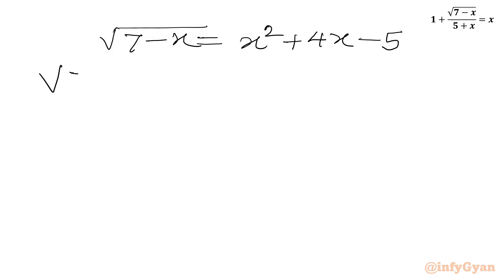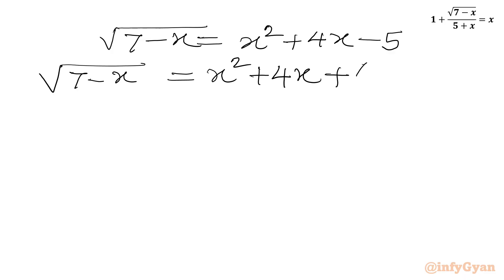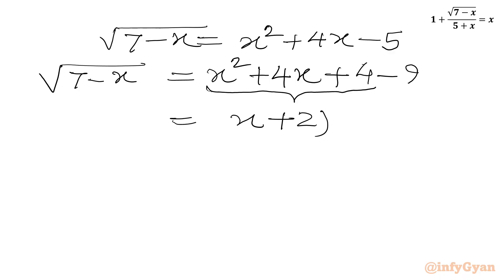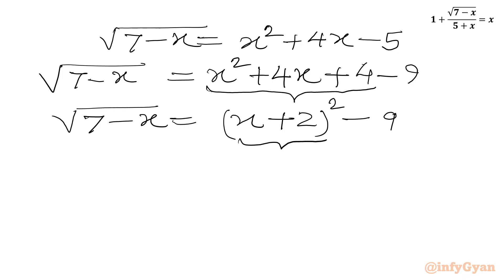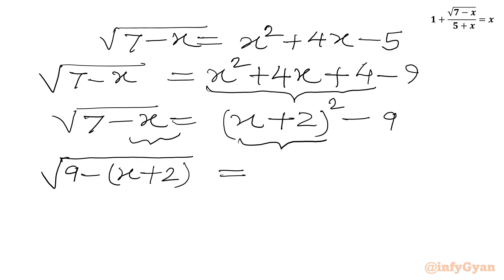We rewrite: square root of (7 minus x) equals x squared plus 4x minus 5. We write minus 5 as 4 minus 9. From the first three terms we can form a perfect square: x plus 2 all squared. Then we have minus 9. On the LHS, noticing x plus 2 appearing, we rewrite as square root of (9 minus (x plus 2)), since 9 minus 2 is 7. So: square root of (9 minus (x+2)) equals (x plus 2) squared minus 9.